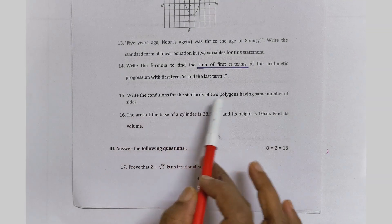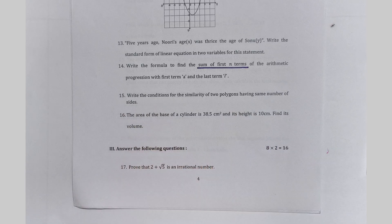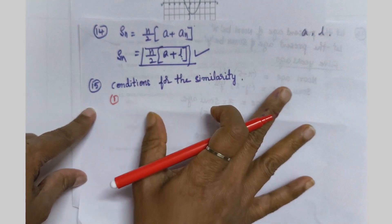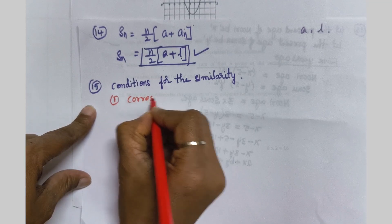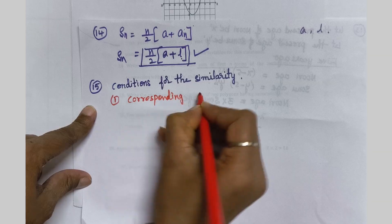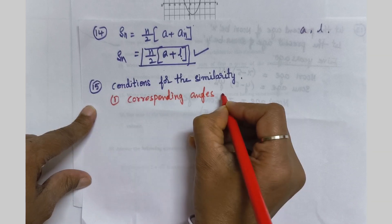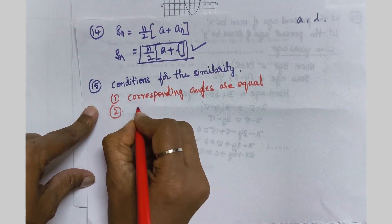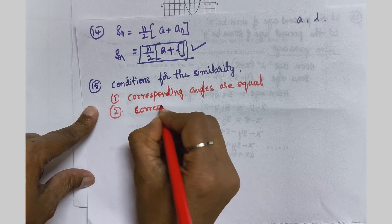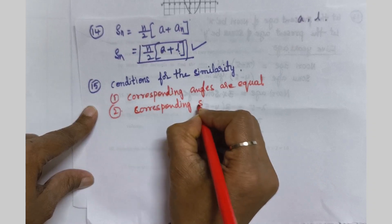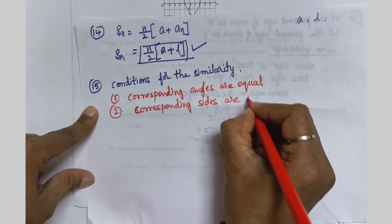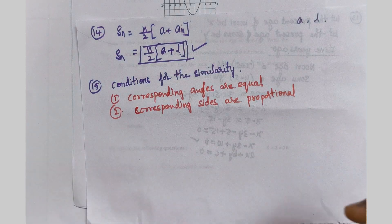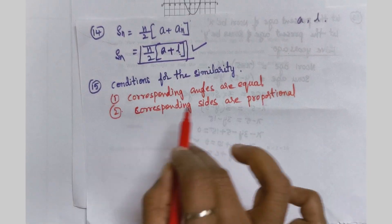Fifteenth question: write the conditions for the similarity of two polygons having the same number of sides. Two conditions: first, corresponding angles are equal; second, corresponding sides are proportional. These are the two conditions for similarity.